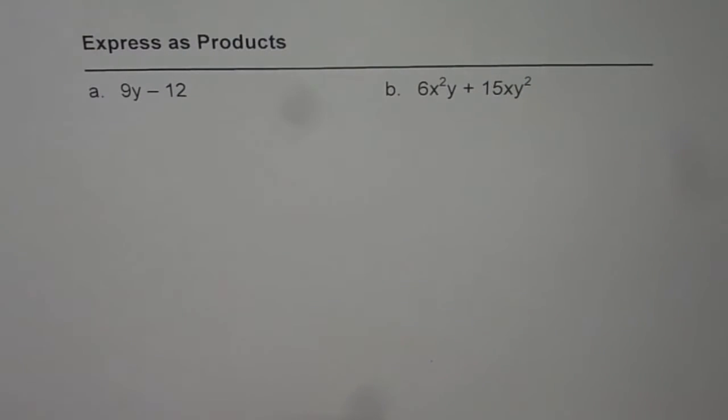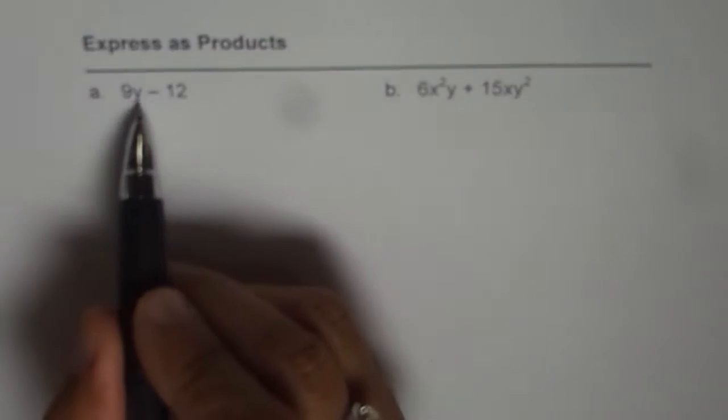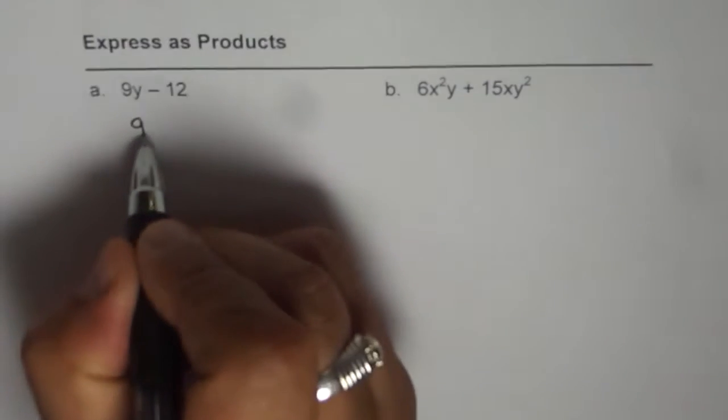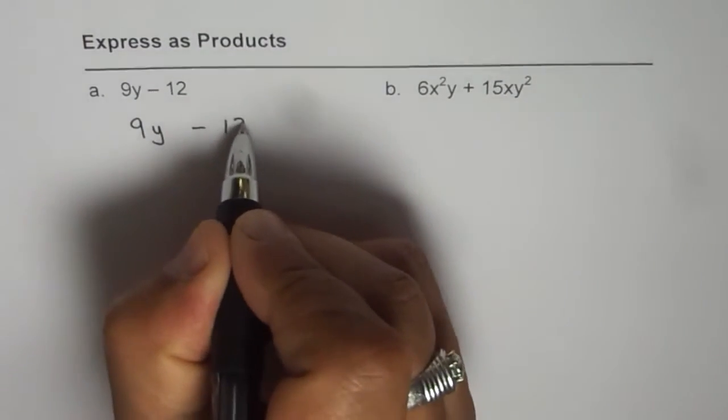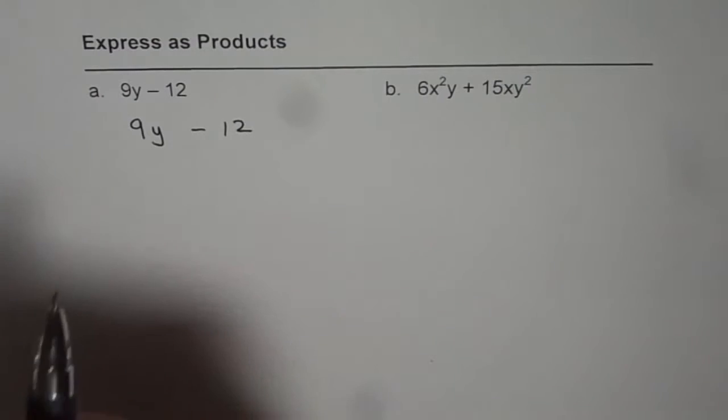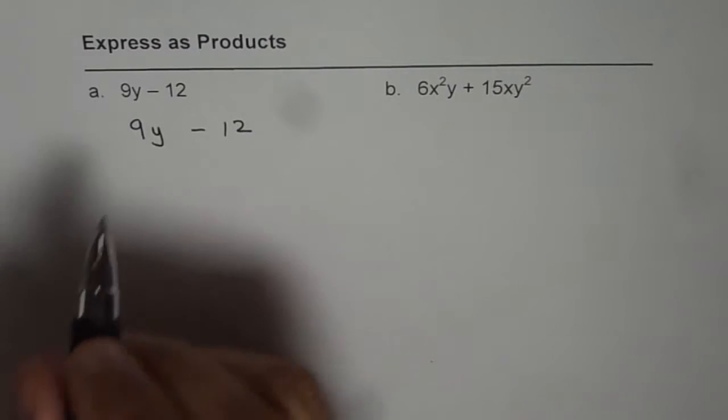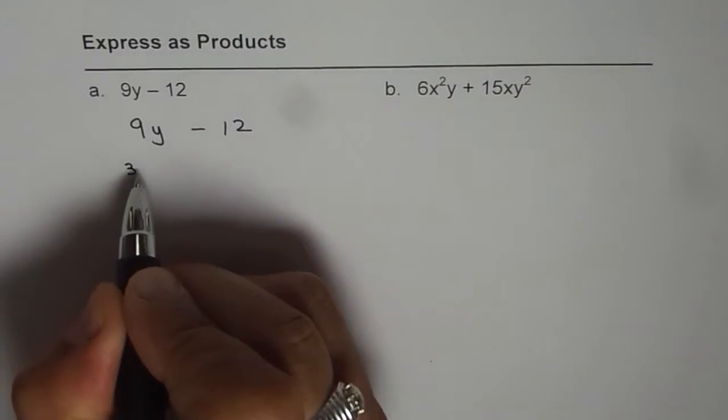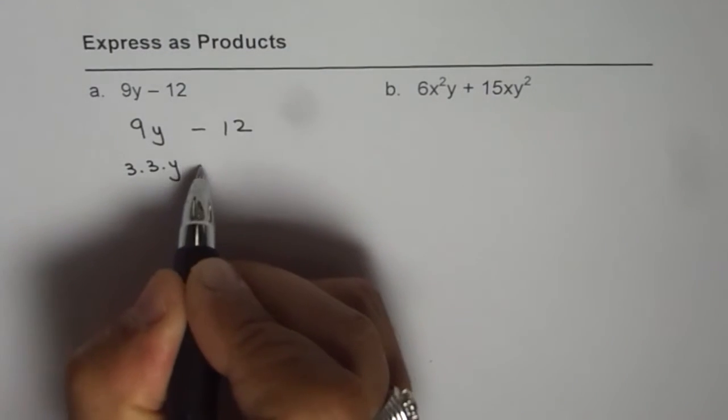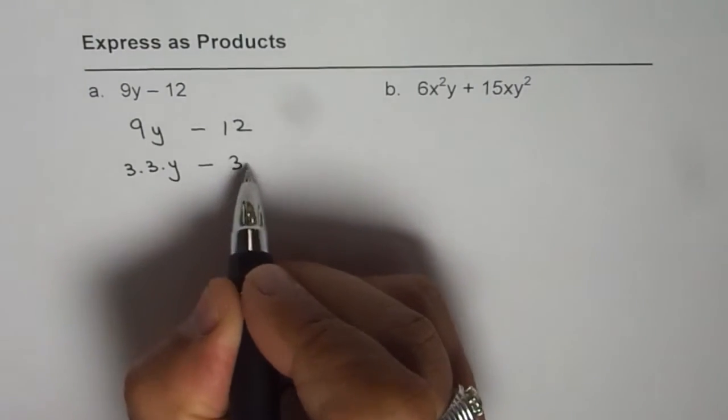Let's see how to express them as products. For 9y minus 12, we could write them with their factors. 9 could be written as 3 times 3, so we write this as 3 times 3 times y. And 12 could be written as 3 times 4.